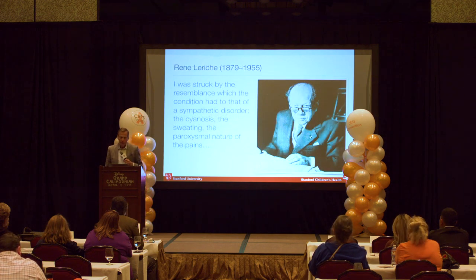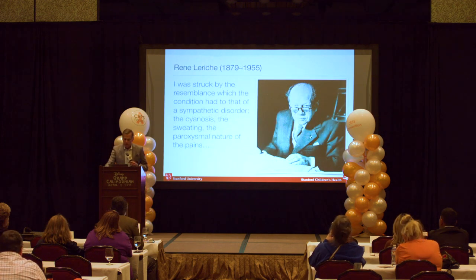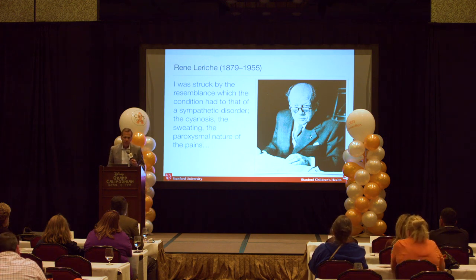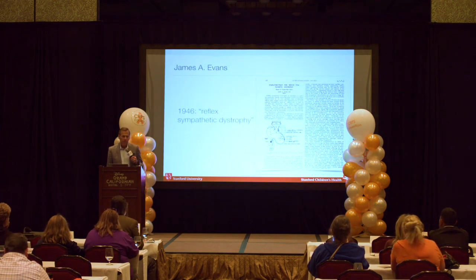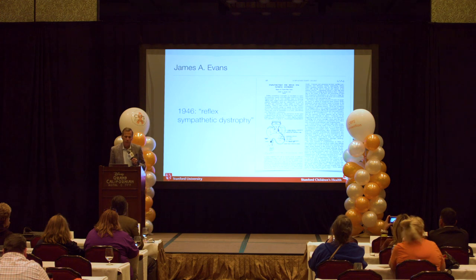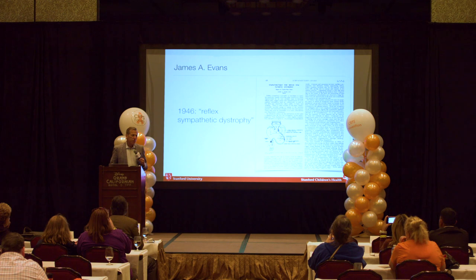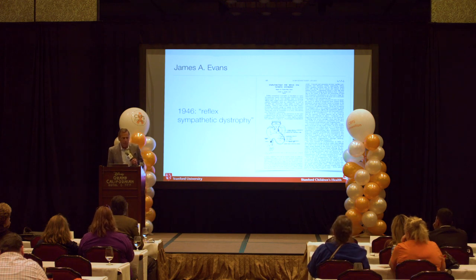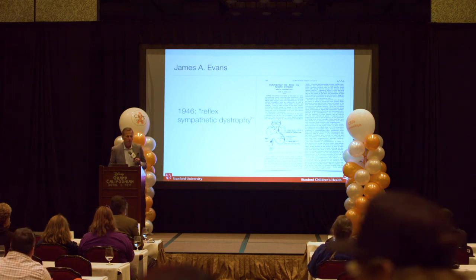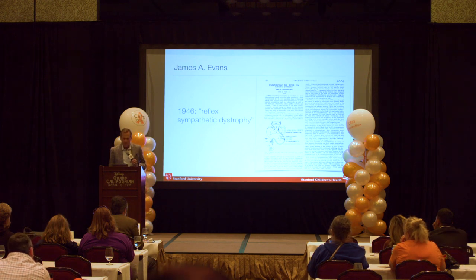Rene Leriche, in the early part of the 20th century, began to describe it as a sympathetic disorder. He noticed it was very similar to disorders of the sympathetic nervous system. A few years later, in 1946, the term 'reflex sympathetic dystrophy' was coined by English physician James Evans, who described surgical cutting of the sympathetic nerves in the abdomen as a treatment.